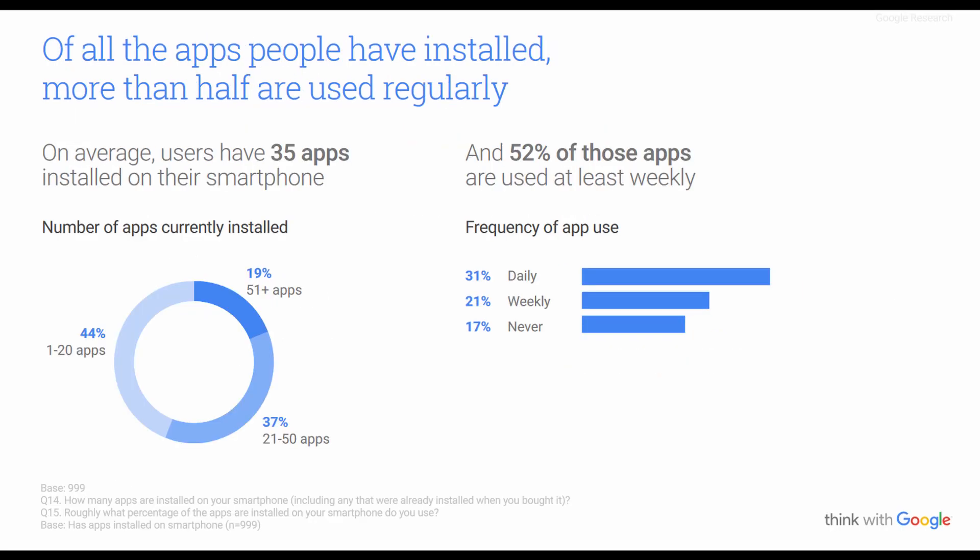On average, users have 35 apps installed on their smartphone, and 52% of those apps are used at least weekly. What this tells us is that if you're making a game, you need to have constant updates. You want players to have a reason to use your game — you want it to be fresh. You don't want them to put it aside, forget about it, and have it be next in line to get deleted to make room for something else on their phone.